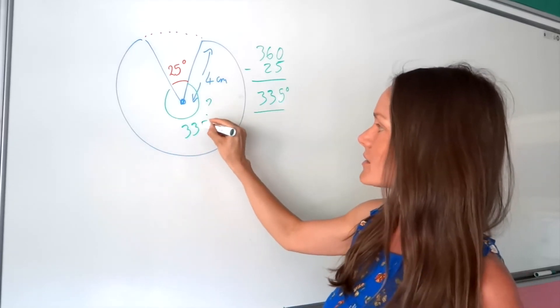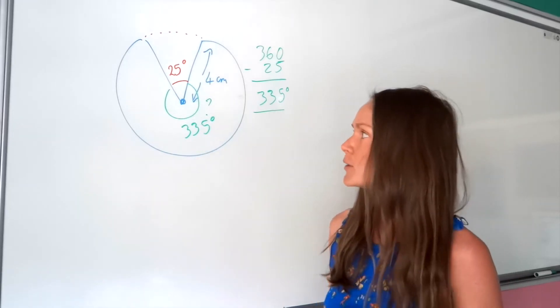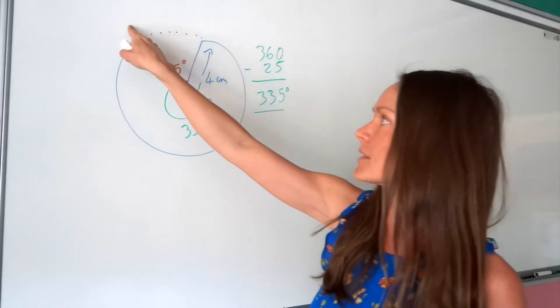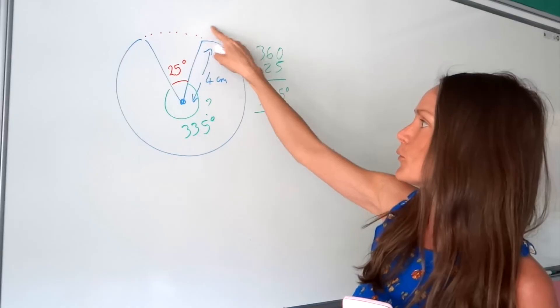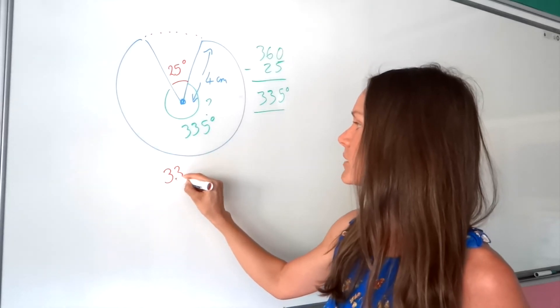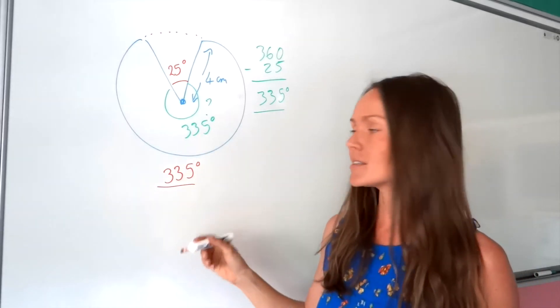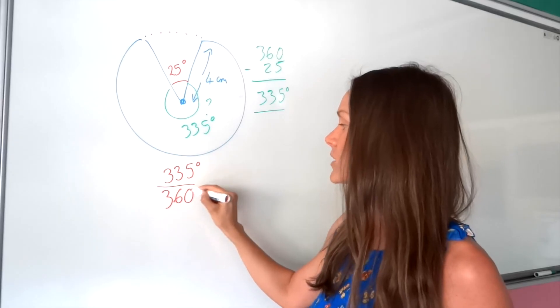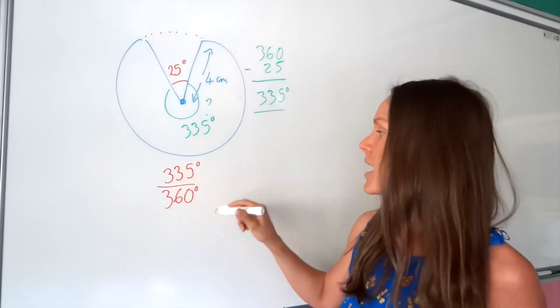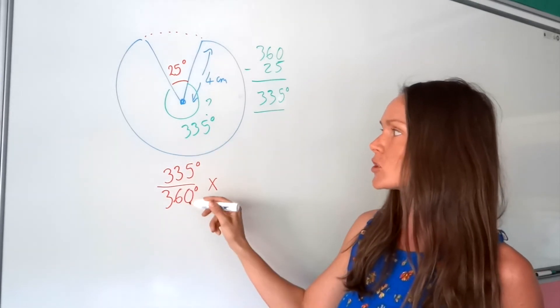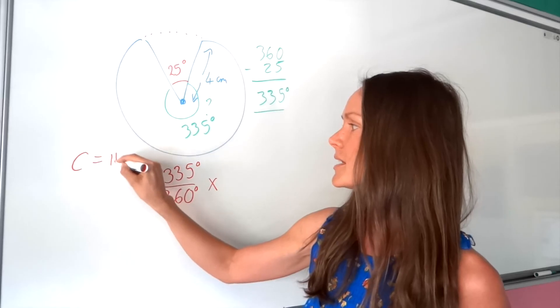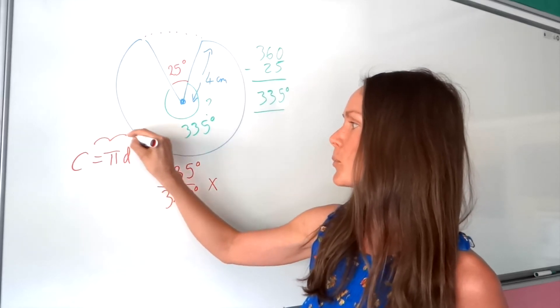So the number of degrees inside our sector are 335. Now we can get started on finding the perimeter. And I'm going to start by finding that big curve part there. So I need to find what fraction this sector is of a circle. So I take the number of degrees inside the sector. And I write that out of 360. And it's always 360 because in a circle, a full circle, you always have 360 degrees. Now remember, you need to multiply that fraction with the formula for the circumference of a circle. Remember, circumference is C equals pi multiplied by the diameter.